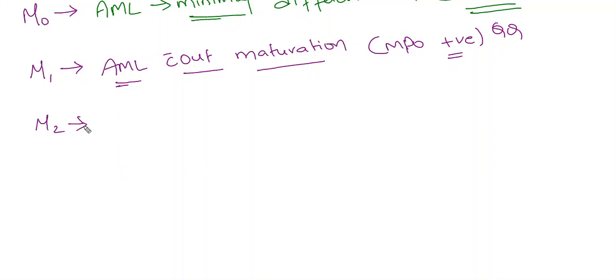M2, M2 is the most common AML, most common subtype of AML, asked many times. And what is this? AML with maturation. The most important thing is chloromas.